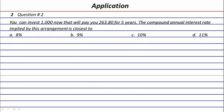Let's go to question number two. You can invest one thousand now and that will pay you 263.80 for five years. The compound annual interest rate implied by this arrangement is closest to: letter A, eight percent; letter B, nine percent; letter C, ten percent; or letter D, eleven percent.